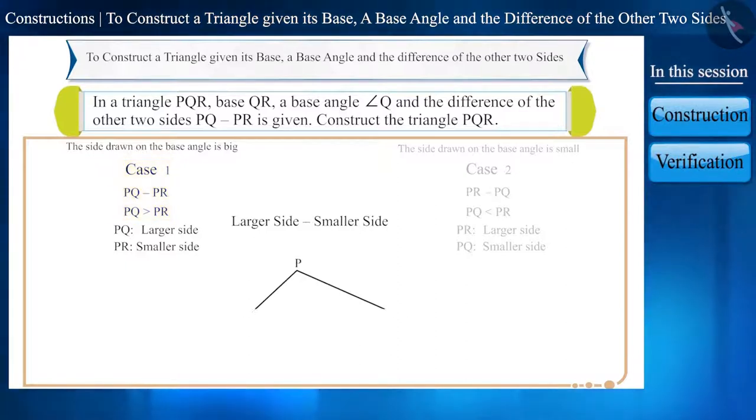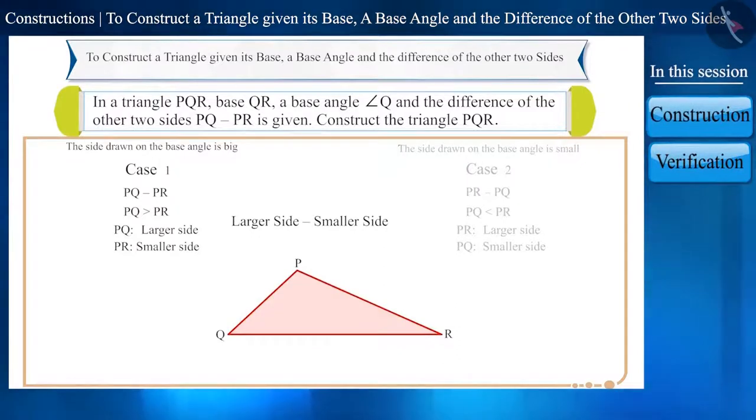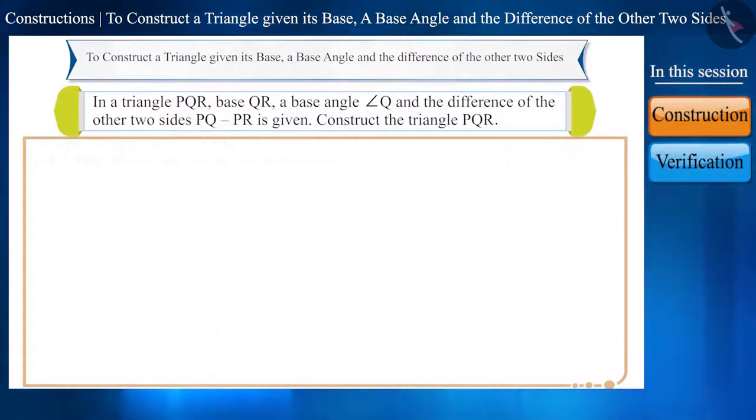Then suppose that we want to construct the triangle PQR, where the base side is QR, the information about PQ minus PR is available, and the measure of angle Q is known. And the steps for the construction of such a triangle are as follows.